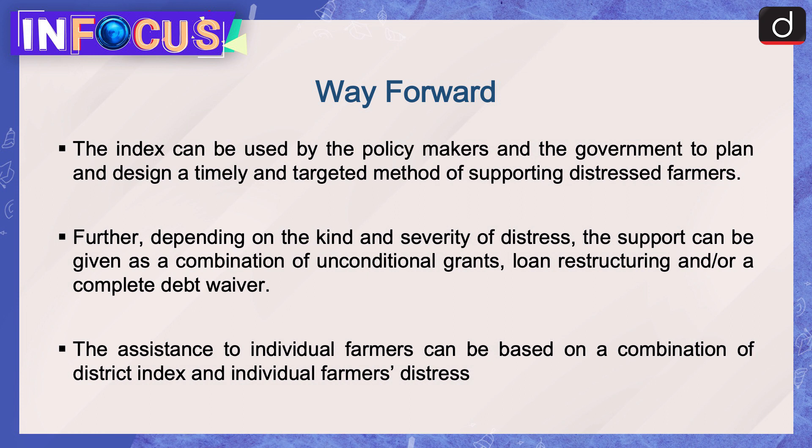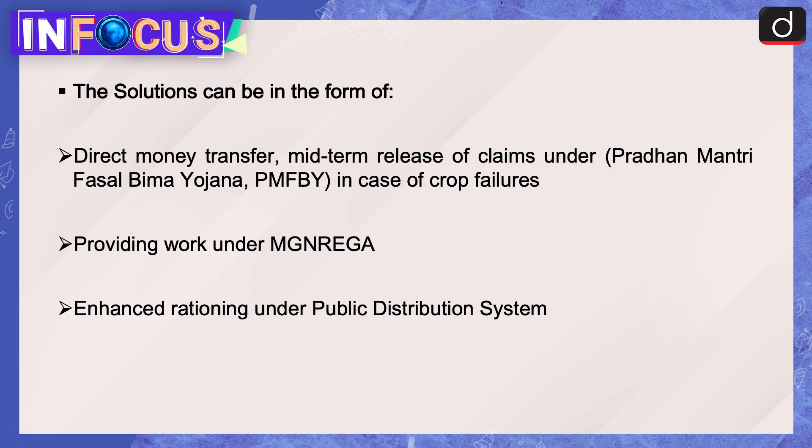Moving on to the way forward: the index can be used by policy makers and the government to plan and design a timely and targeted method of supporting distressed farmers. Depending on the kind and severity of distress, support can be given as a combination of unconditional grants, loan restructuring, and/or a complete debt waiver. Solutions can include direct money transfer, mid-term release of claims under Pradhan Mantri Fasal Bhima Yojana in case of crop failures, providing work under MGNREGA, and enhanced rationing under the public distribution system.